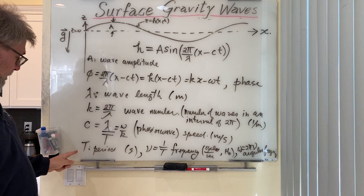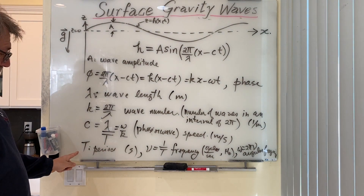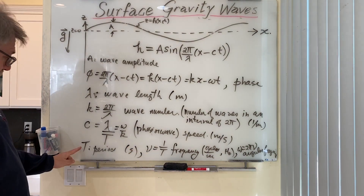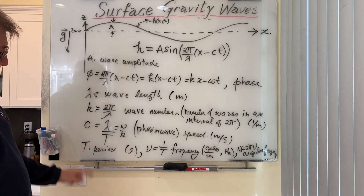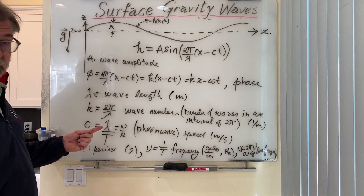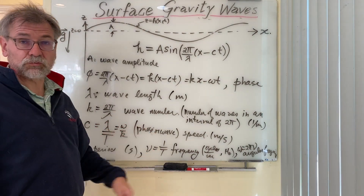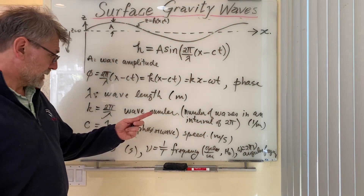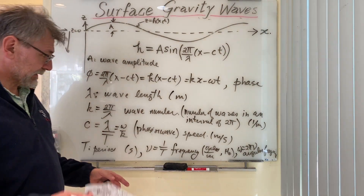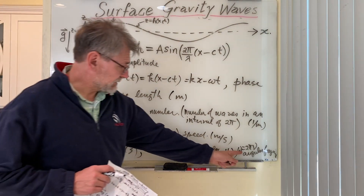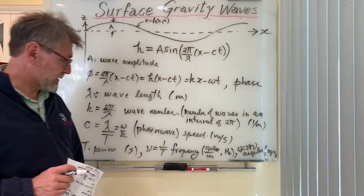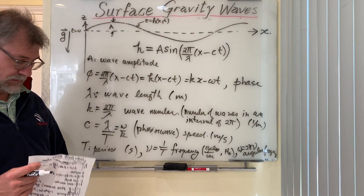ν (nu) is the reciprocal of the period and is the frequency — the period is the amount of time to go through one full cycle of the wave. Omega ω is the angular frequency, just 2π times the regular frequency.